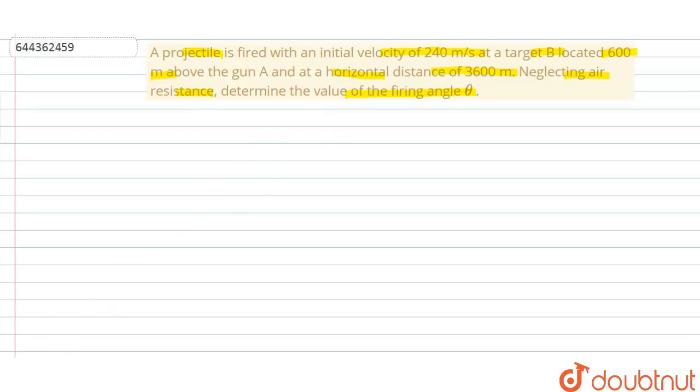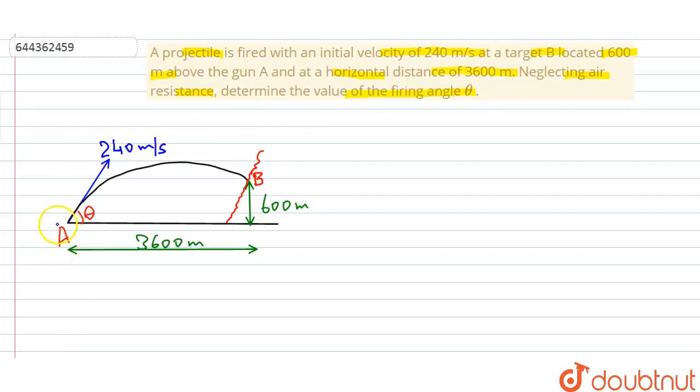First of all, let us make a figure. In this figure, we can see that a projectile is fired from this gun which is at point A at an initial velocity of 240 meter per second. It is hitting a target at point B that is located 600 meter above the gun A.